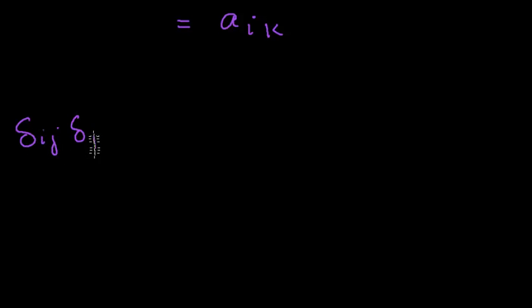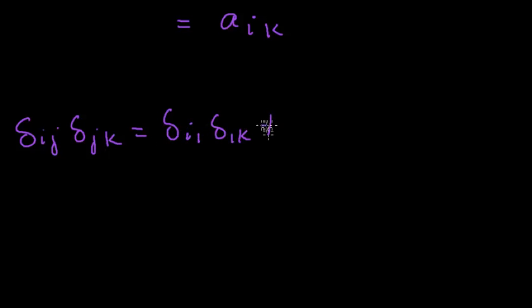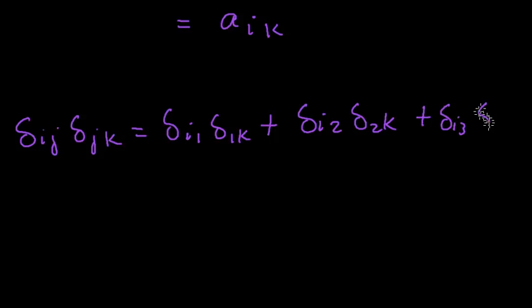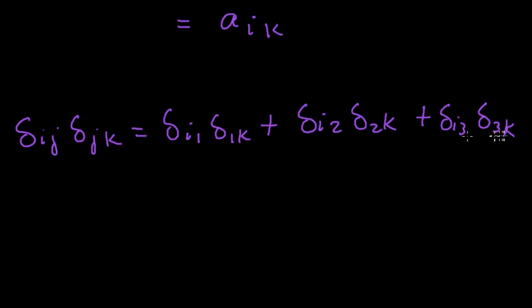Now let's look at δ_ij times δ_jk. Here i and k each appear once, and j appears twice, so j is the dummy variable. Expanding the sum: δ_i1·δ_1k + δ_i2·δ_2k + δ_i3·δ_3k. Looking at the values of k: if k is 1, then δ_1k equals 1 and all others are 0, so δ_i1 would remain.